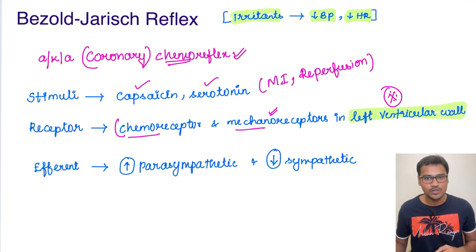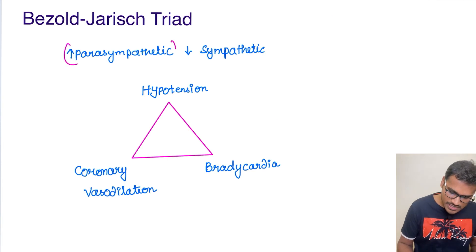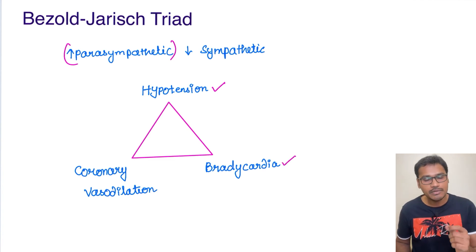So what is the ultimate triad of this Bezold-Jarisch reflex? Because there is an increase in parasympathetic, there is going to be hypotension and bradycardia. And due to the local metabolites, vasodilation is also going to happen. So the classical triad includes hypotension, bradycardia, as well as coronary vasodilation.